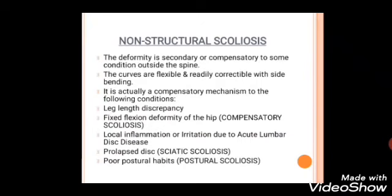Non-structural scoliosis, also known as postural scoliosis, has deformity secondary or compensatory to some condition outside the spine. The curves are flexible and correctable with side bending — when the patient side-bends, the curve may disappear. It is a compensatory mechanism to conditions such as leg length discrepancy (LLD), fixed flexion deformity of the hip, local inflammation or irritation due to acute lumbar disc disease or prolapsed disc causing sciatic scoliosis, and poor postural habits.